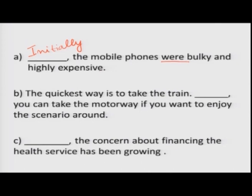Second sentence: 'The quickest way is to take the train, blank. You can take the motorway if you want to enjoy the scenario around.' The context gives a clue — you are talking about train and motorway, two options. So you can use 'alternatively': 'Alternatively, you can take the motorway.'